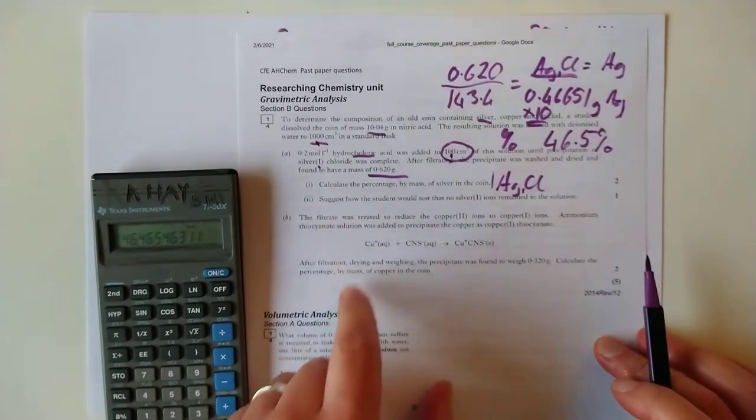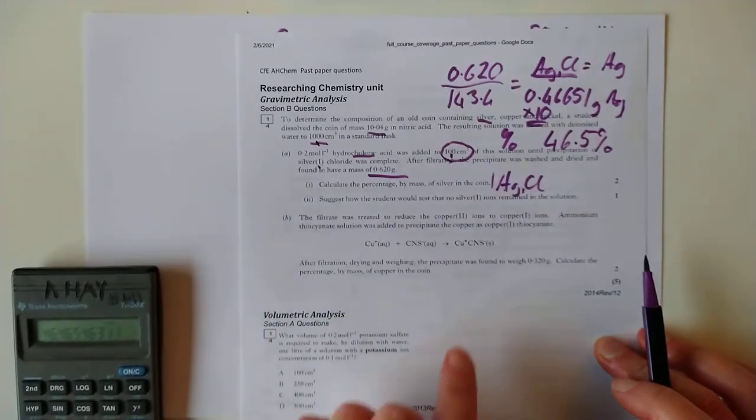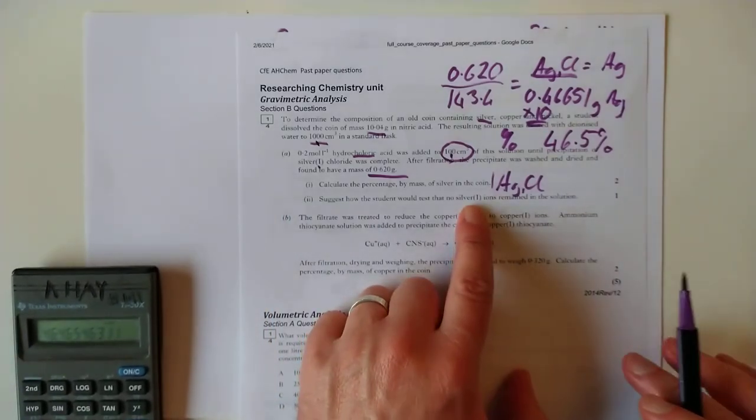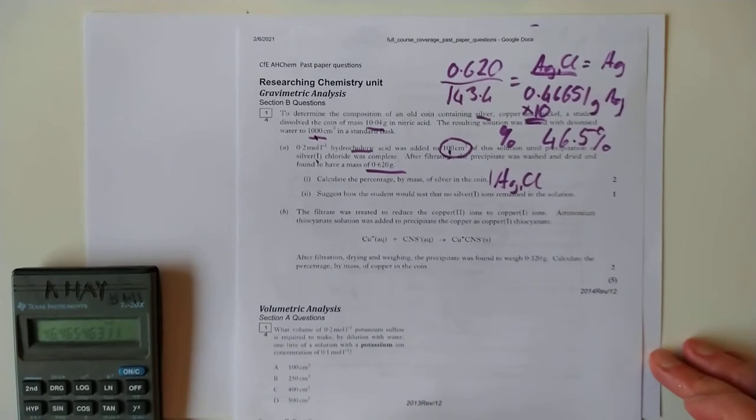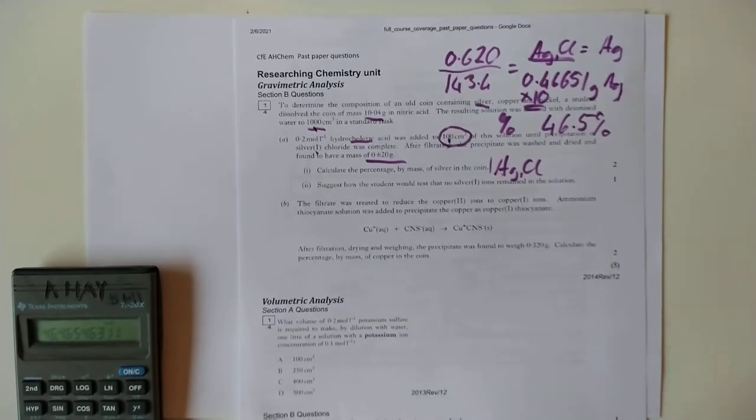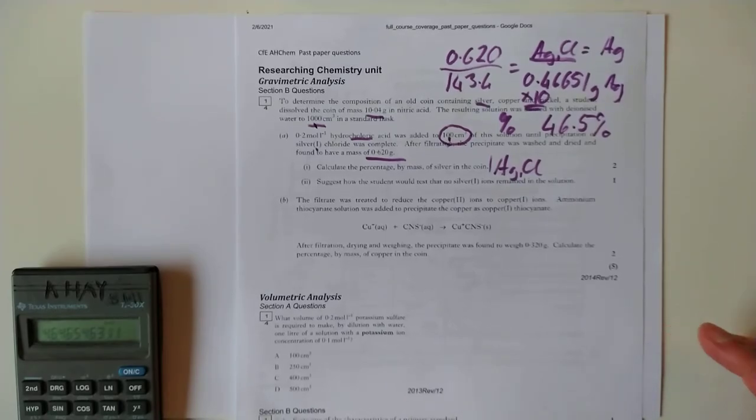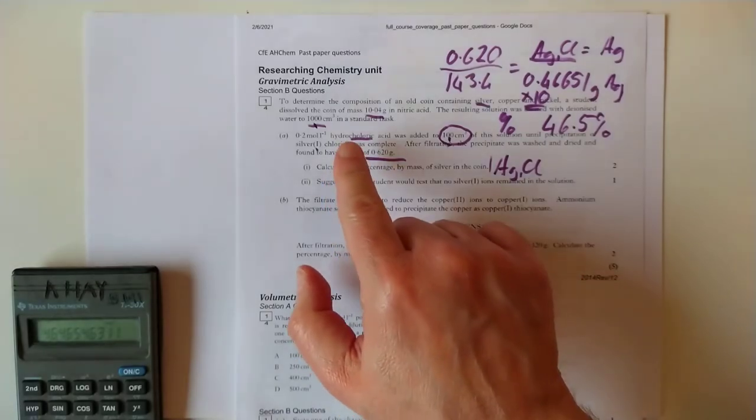This one's an interesting one. Suggest how the student would test that no more silver ions remained in the solution. How do you know you got all the silver out as a precipitate is a very good question if you're going to do any sort of analysis.